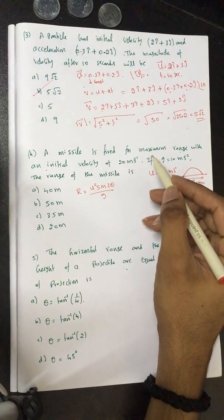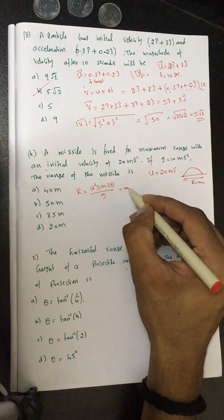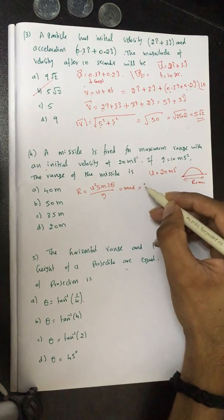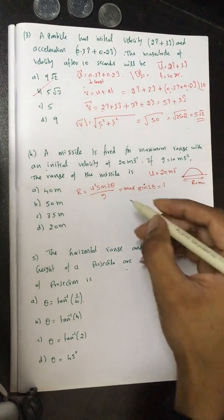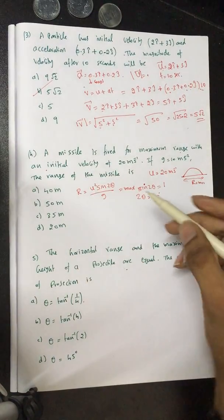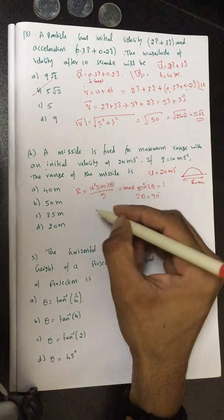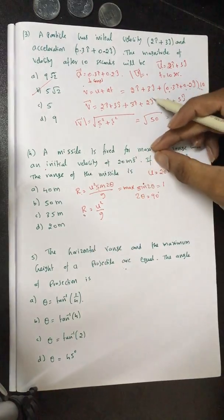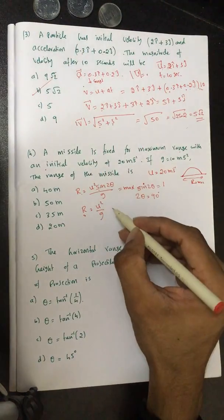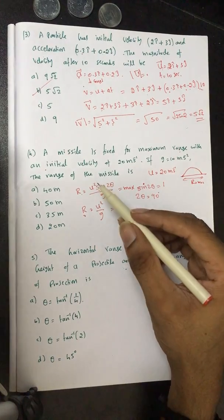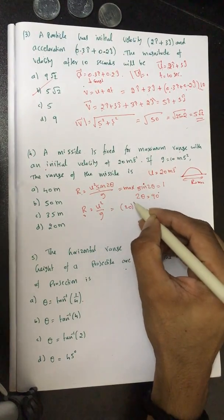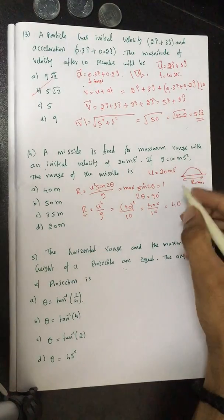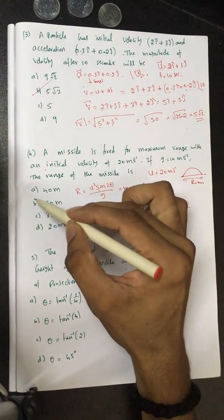For maximum range, R is maximum, which means sin 2θ must be maximum. sin 2θ is maximum when 2θ = 90°, so sin 2θ = 1. Therefore R = u²/g. Substituting: R = 20²/10 = 400/10 = 40 meters. The range is 40 meters.